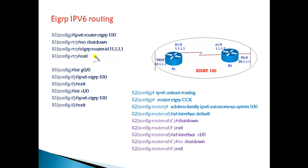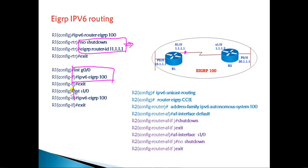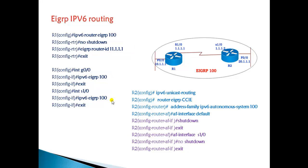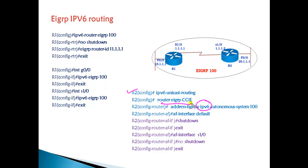For IPv6 in classic mode, we need to define 'no shutdown' and set the EIGRP router ID, then enable the protocol under each interface individually — requiring us to go to every interface to enable IPv6 EIGRP. In name mode, we first enable IPv6 unicast routing, then go to the router EIGRP instance and define 'address family ipv6'.